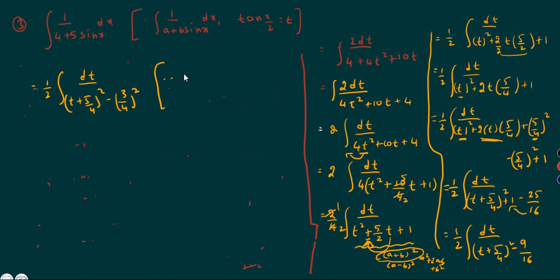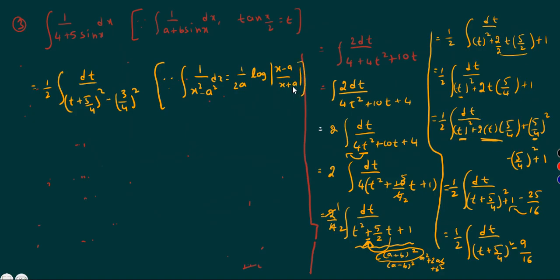Now it is in the form of integration of 1 by (x square minus a square) dx. The formula for this is 1 by 2a times log mod of (x minus a) by (x plus a) plus c. Here x corresponds to (t plus 5/4) and a corresponds to 3/4. The remaining process follows the same steps.